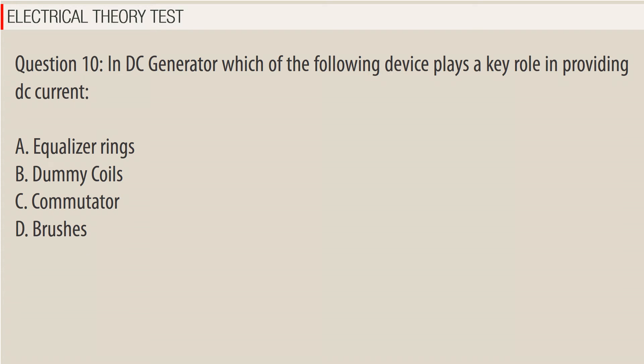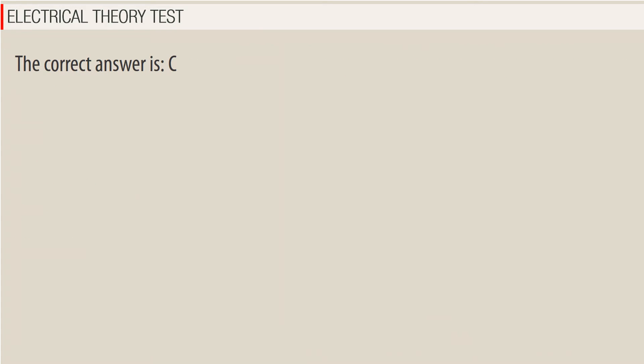Question 10: In a DC generator, which of the following device plays a key role in providing DC current? A. Equalizer rings, B. Dummy coils, C. Commutator, D. Brushes. The correct answer is C.